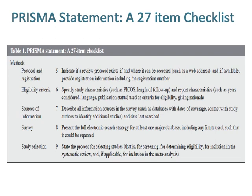Item 7 regarding sources of information is to describe all information sources in the survey, such as databases with dates of coverage, contact with study authors to identify additional studies, and date last searched. Item 8 regarding the search is to present the full electronic search strategy for at least one major database, including any limits used, such that it could be repeated. Item 9 regarding study selection is to state the process for selecting studies — for screening, for determining eligibility, for inclusion in the systematic review and, if applicable, for inclusion in the meta-analysis.